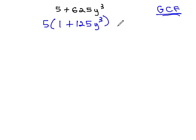We can decide our next step based on the number of terms in the expression. 2 terms is a shortcut, 3 terms is the AC method, and 4 terms would be grouping. Here we have 2 terms.